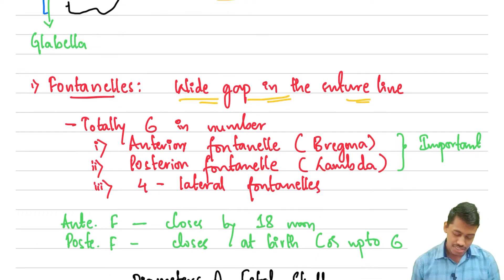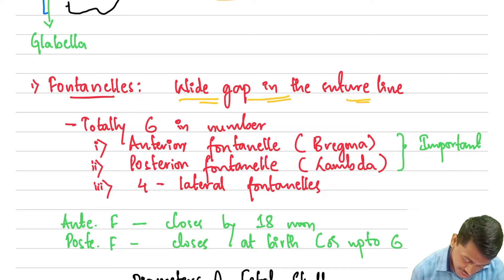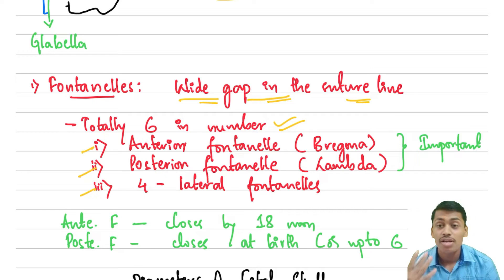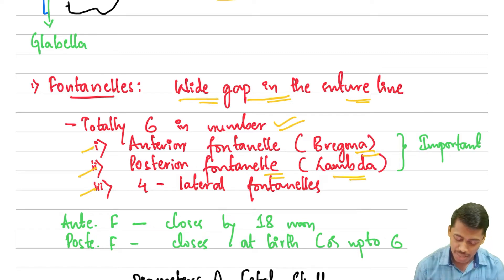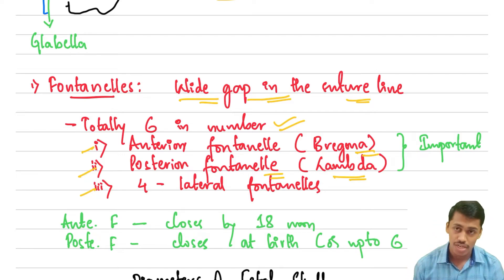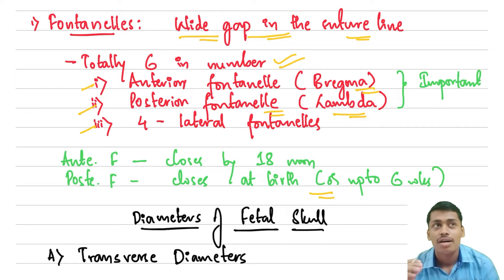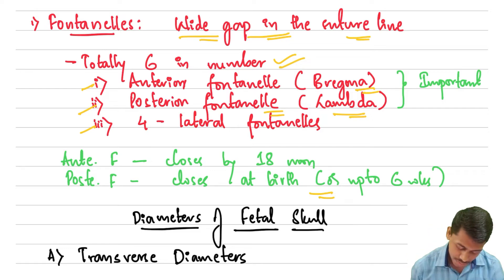Fontanels are nothing but a wide gap in the suture line. There are six fontanels in total: the anterior fontanel, posterior fontanel, and four lateral fontanels. The anterior fontanel is also called the bregma, while the posterior fontanel is called the lambda. The anterior and posterior fontanels are the two important ones, while the four lateral fontanels are not that important. The posterior fontanel closes at birth or may take up to six weeks after birth.